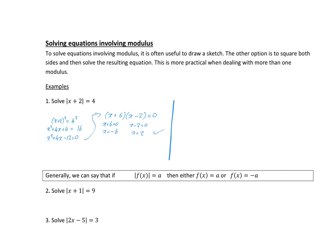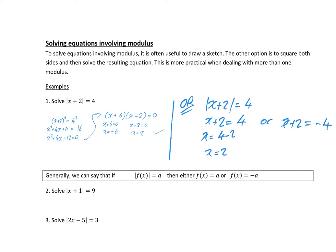There is another way of doing it, which is maybe a bit easier, but you might run into a few problems sometimes. For the modulus of x plus 2 equals 4, the positive version gives x plus 2 equals 4, so x equals 2. The negative version gives x plus 2 equals minus 4, so x equals minus 6. Both methods give the same answers.